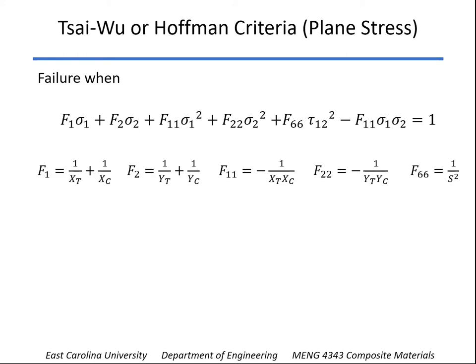Here are the parameters again: F1, F2, etc. They involve the tensile strength in the fiber direction XT, the compression strength in the fiber direction XC, tensile and compression strength in the transverse direction YT and YC, and the in-plane shear strength capital S.